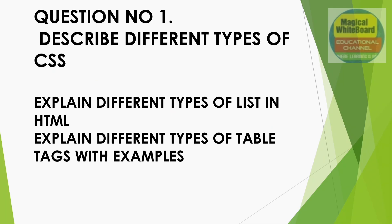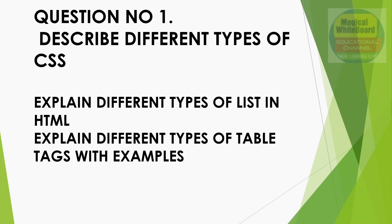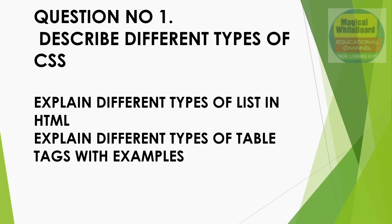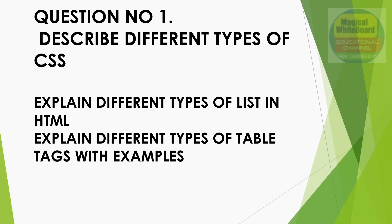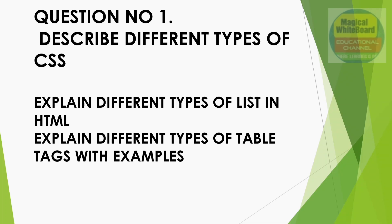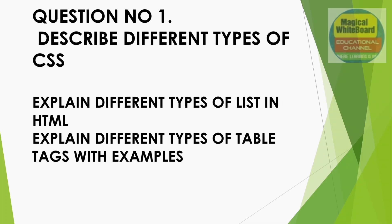Number 1, first question: Describe different types of CSS — inline CSS, internal and external CSS. These three CSS types are covered. Let's look at the details with examples. Next: Explain different types of lists. Explain different types of table tags — table creation and table-related character tags. These are the question number 1 topics.